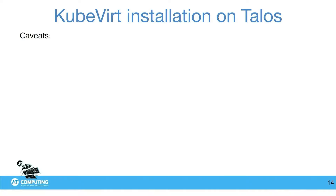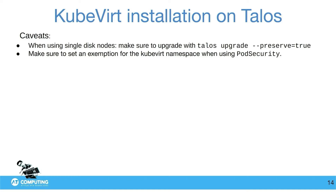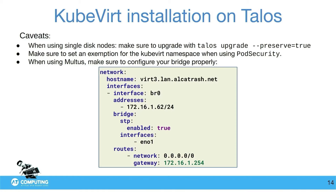There were some caveats I came across along the way. When using a single disk node, make sure to upgrade Talos with --upgrade-preserve=true. In version 1.8.0 this will be the default behavior, but it wiped my whole system and all my virtual machines were gone. Make sure to set an exemption for the KubeVirt namespace when using pod security, otherwise strange things will happen. And when using Multus — it's a bit of a pain in the ass — you have to configure your bridge. I applied it with the bridge interface configured directly and my node went down and never came up. I reapplied it with a DHCP IP address first, then reapplied the bridge, and then it worked magically.